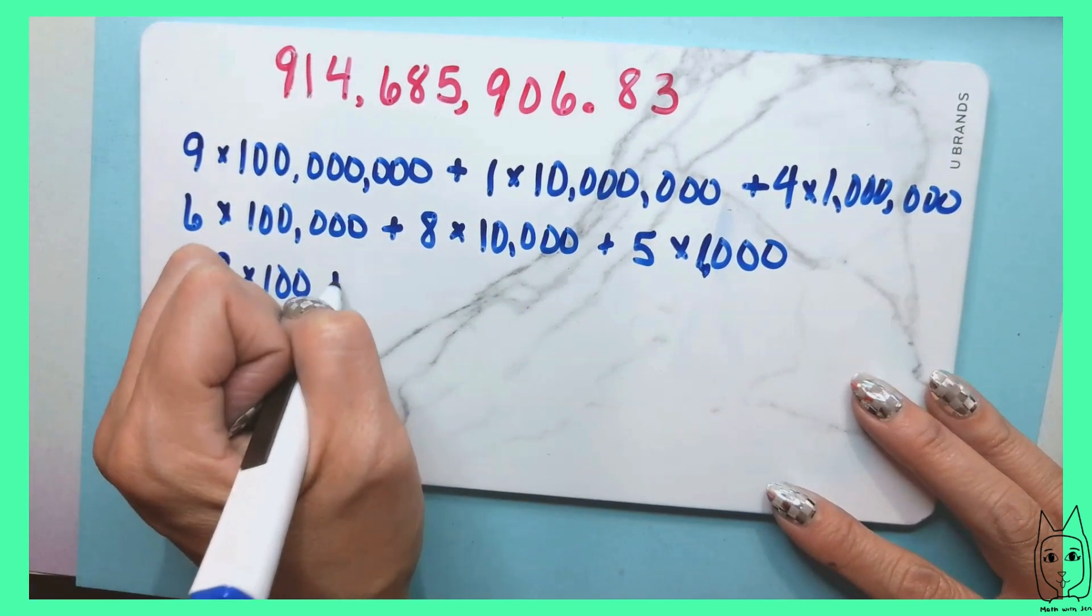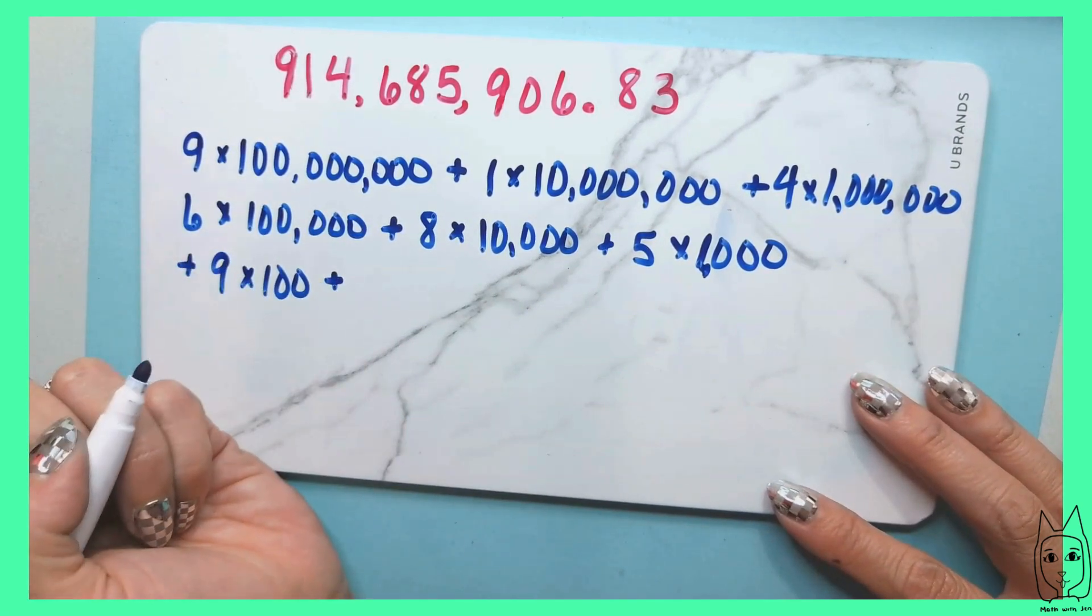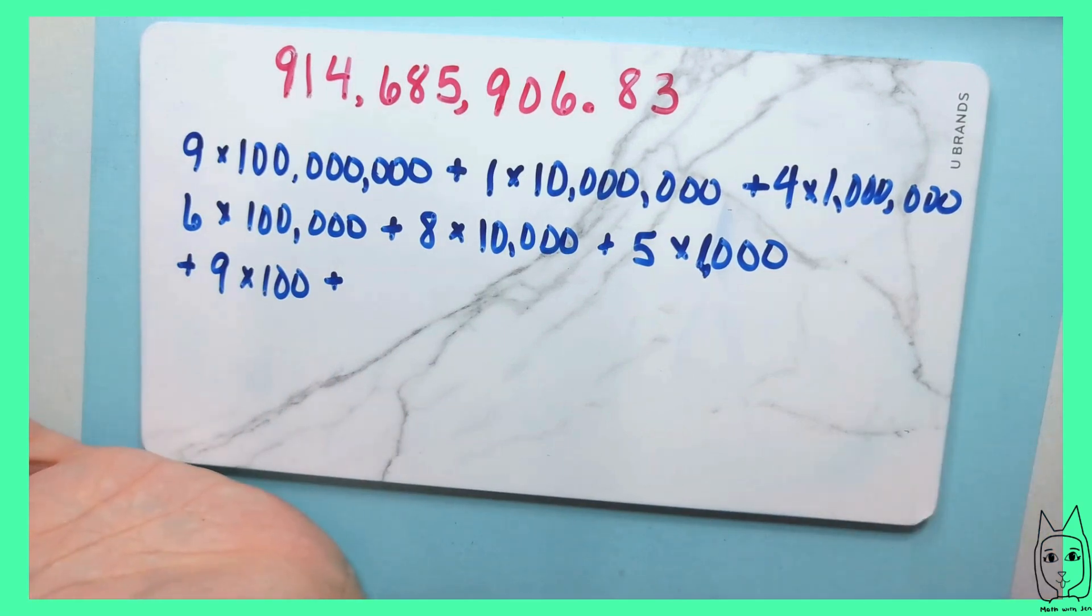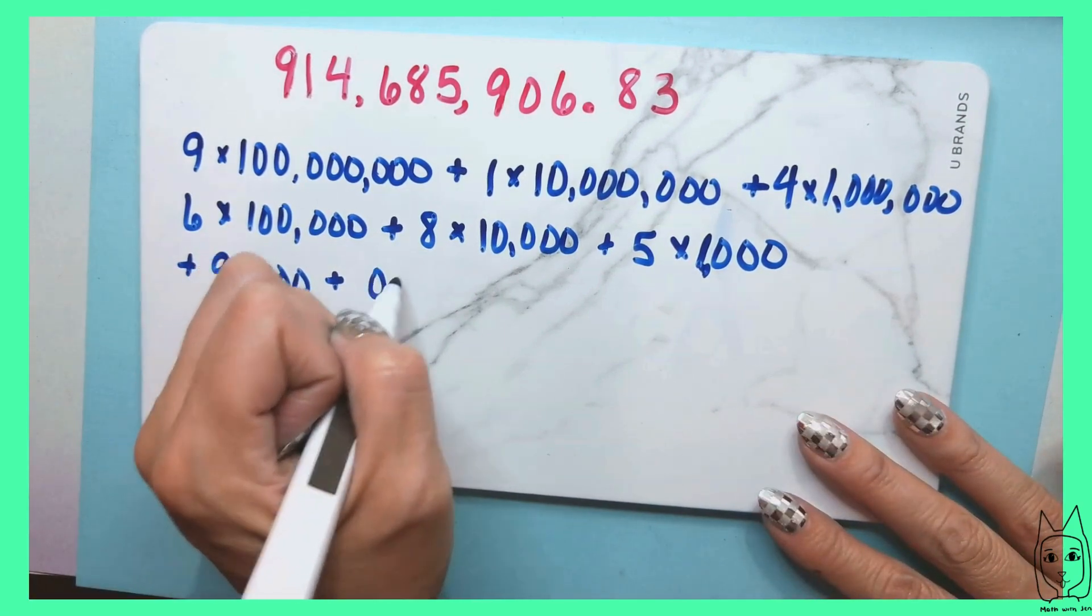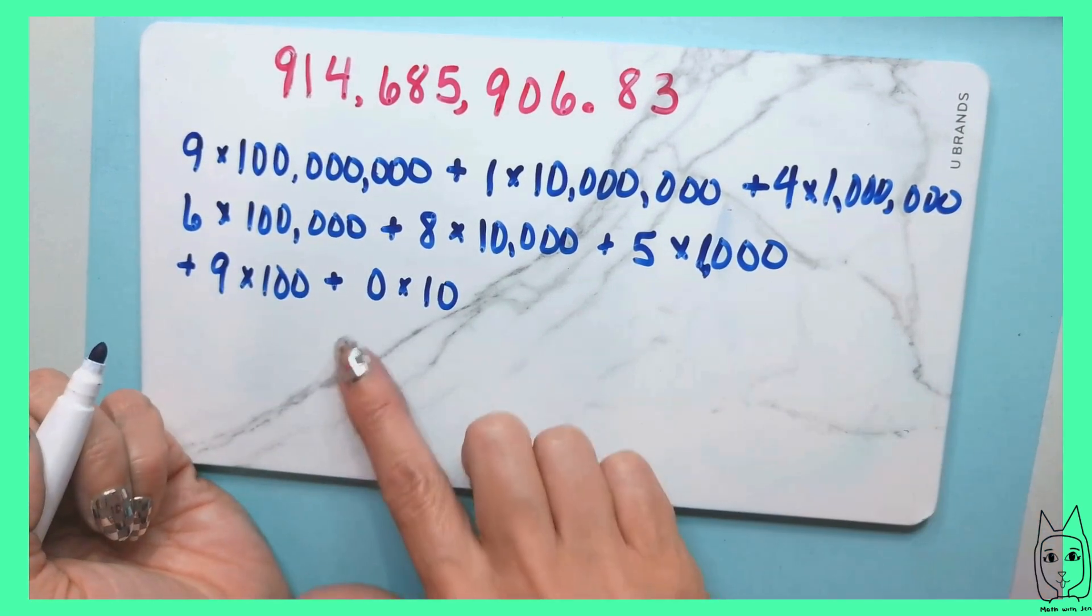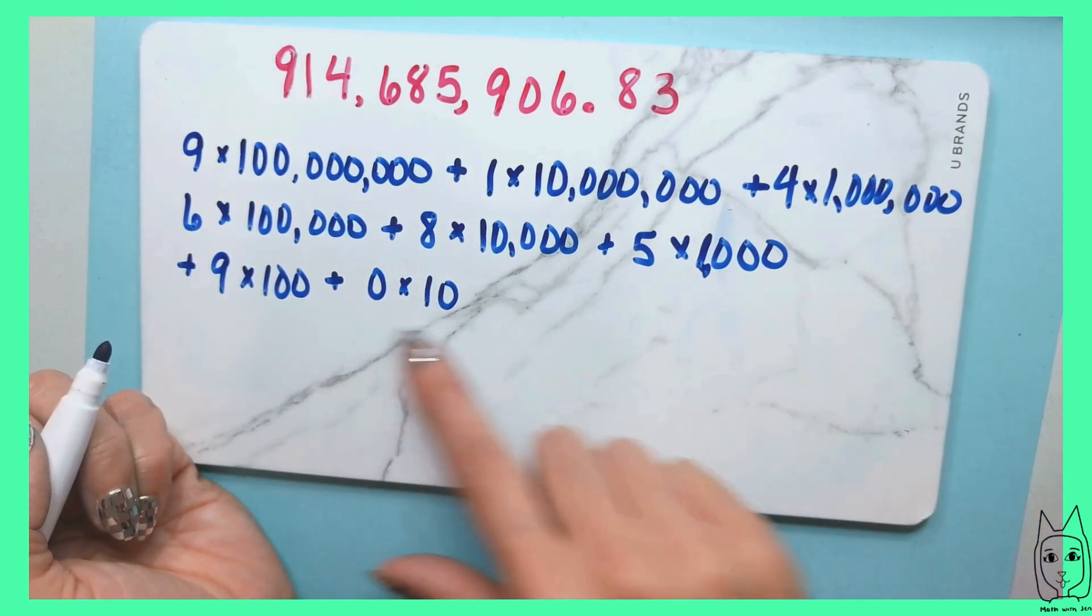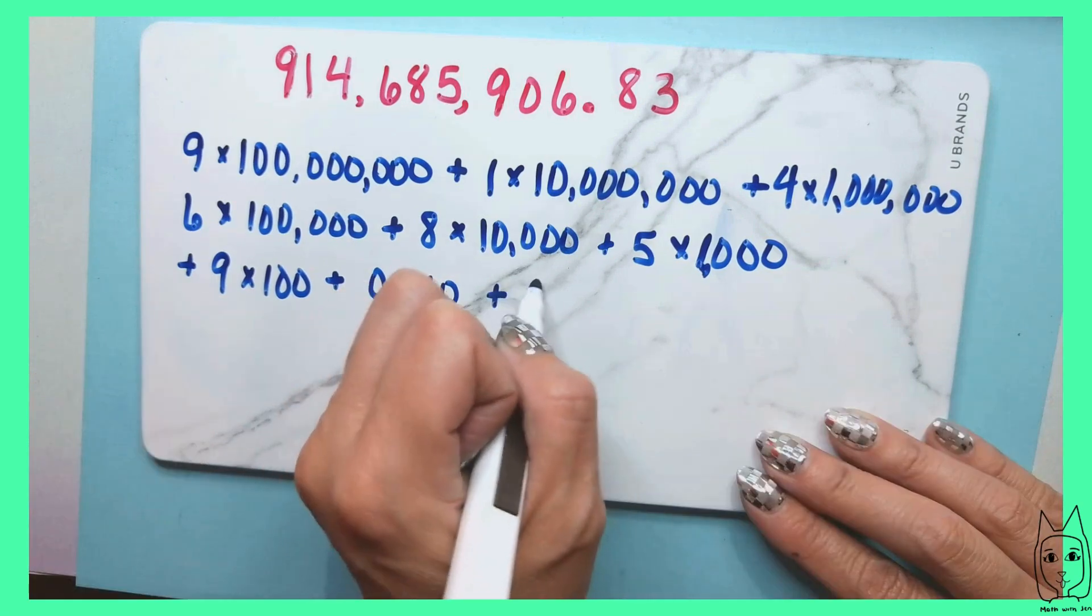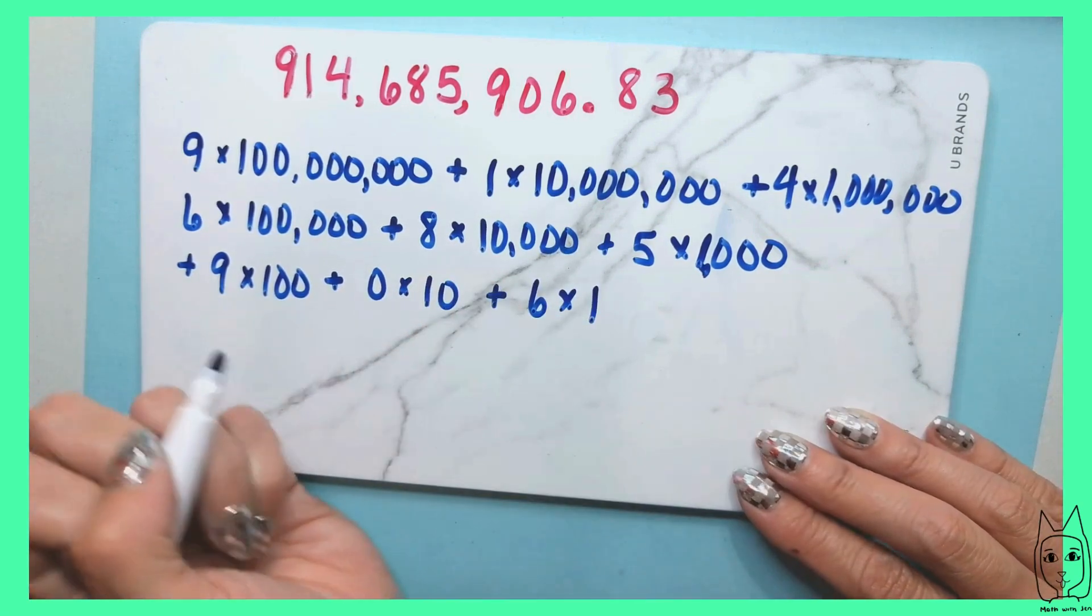Then we have no tens. So I could either put 0 times 10 or I can just skip it altogether. I'm going to write 0 times 10, just because I want you to see it, but you don't need to write that. And it probably wouldn't be written. And then there's six ones, so 6 times 1.